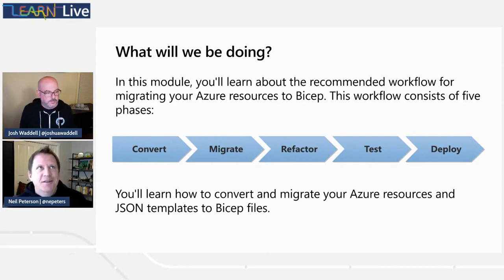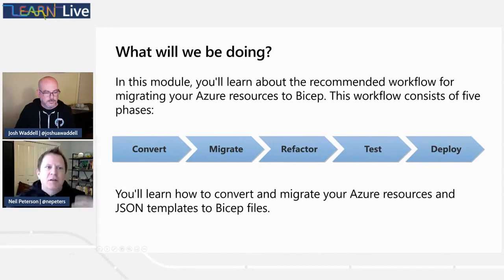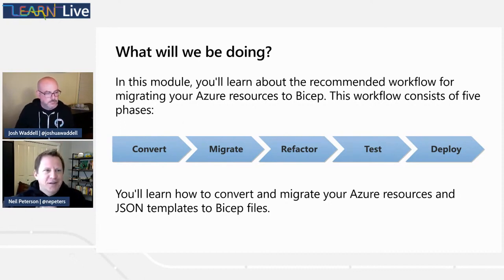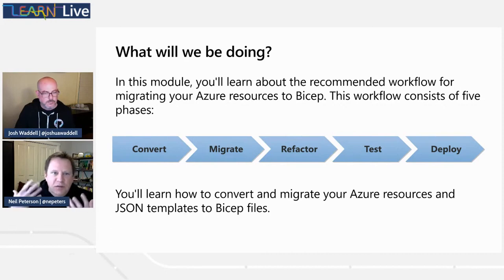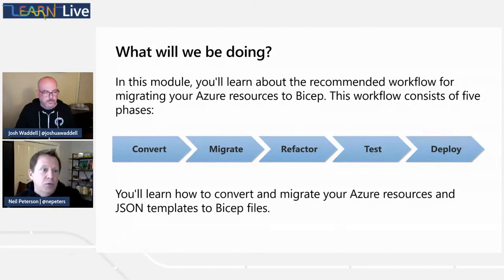We'll then talk about migration. While it's very valuable to pull resources from Azure APIs, there is some cleanup you want to do — really massage through the data and make sure it's ready to go. It's an opportunity to make sure it's valid, clean it up, implement standards, implement commenting. We'll then talk about refactoring — renaming things, adhering to company standards. Then talk about testing and finally deploying. Really just the end-to-end workflow from deployed resources or JSON all the way through testing and redeployment with your new Bicep templates.